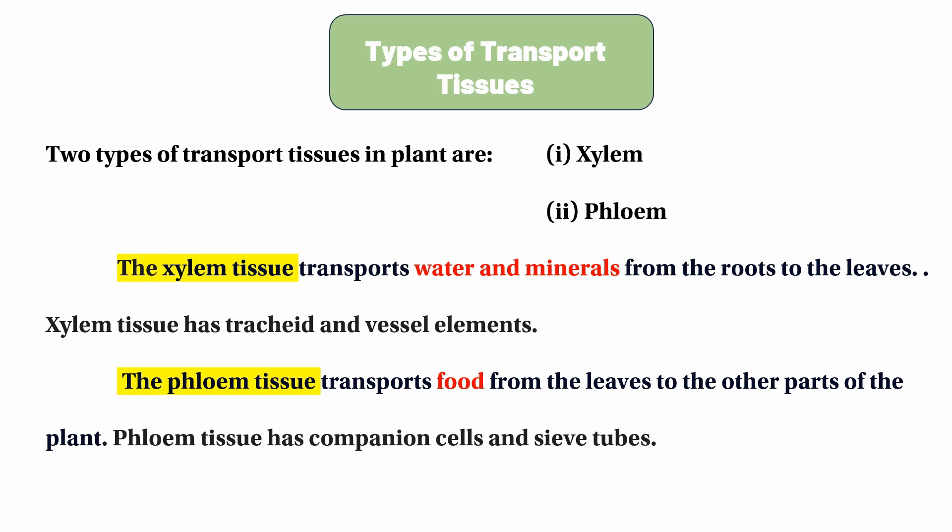Phloem tissue transports substances from the leaf to other parts of the plant, from the leaf to the storage organ, and from the storage organ to the growing regions. Phloem vascular tissue includes primary phloem and secondary phloem, moving in the upward and downward direction at the same time.